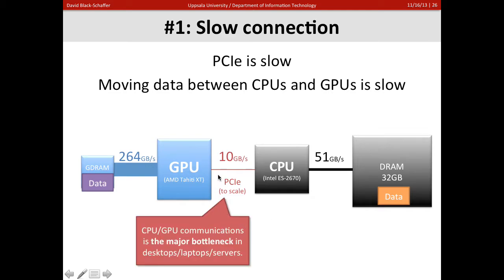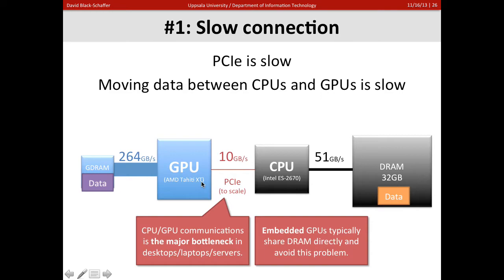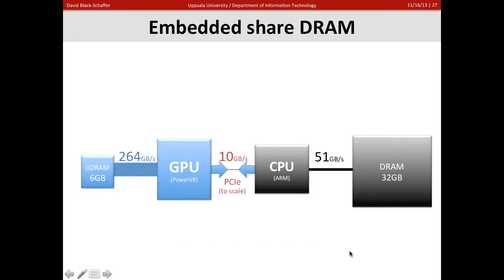Slow data movement is the major bottleneck. If you have to transfer data back and forth, you lose an enormous amount of performance. It also makes programming much harder, because you now have to overlap your data transfers with your computation in order to avoid that performance loss.